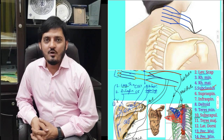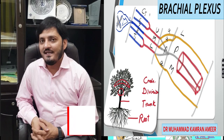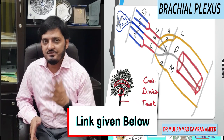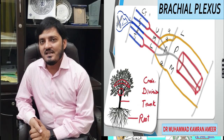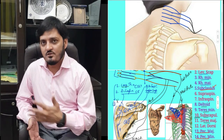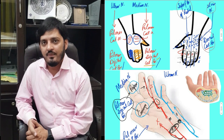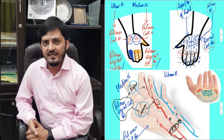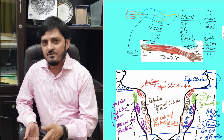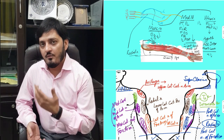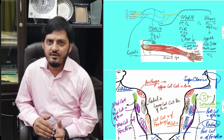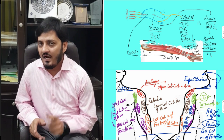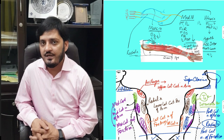Hello, my dear students. Today I am going to talk about the nerve supply of the upper limb. This is Part 2 of my lecture. Part 1 was about Brachial Plexus Basics and Brachial Plexus Formation. In this lecture, I'll tell you the nerve supply of all the muscles of the upper limb and the sensory innervation of all the skin of the upper limb.